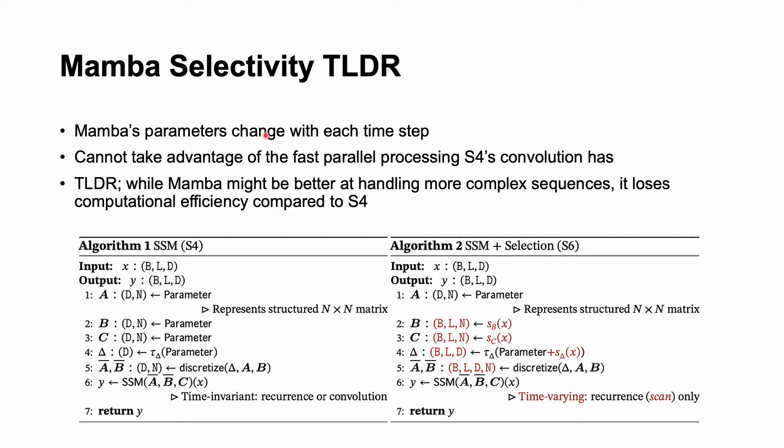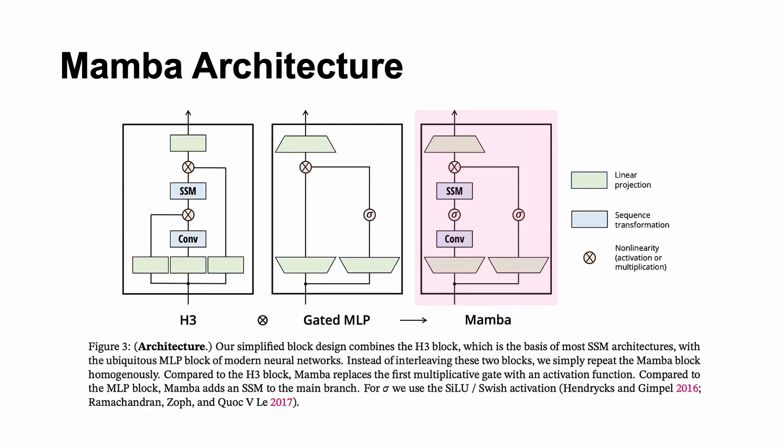Just because of the nature of the time varying dynamic behavior is very linear. You have one step depends on another. There's no way that you can do a convolution at that point. At least with the Mamba S6. So yes, Mamba's parameters change with every time step. You cannot take advantage of the fast parallel processing that S4's convolution has. In TLDR, while Mamba might be better at handling more complex sequences, it loses that computational efficiency because of parallelization compared to S4. However, it's still a little bit better than transformers, which is quadratic because this is now linear. These selective SSM blocks can be incorporated as standalone transformations into a neural network.